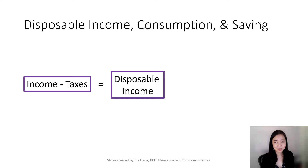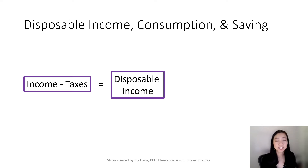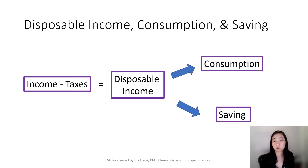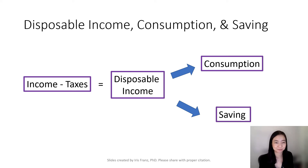We start with your income. After you get an income, the first thing you have to do is pay tax. After you pay your tax, you will have the disposable income. Once you get this disposable income — we call that DI — you can decide how much you want to spend and how much you want to save. The amount that you spend will be your consumption and the amount you save will be your saving.